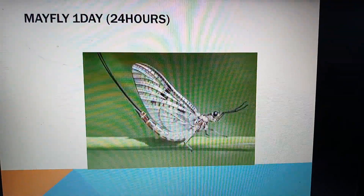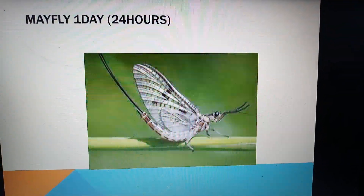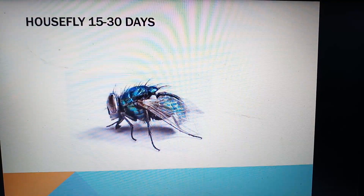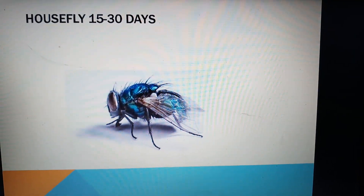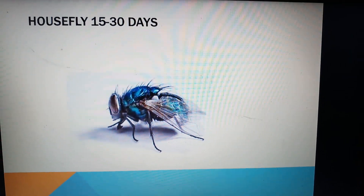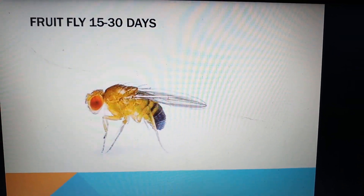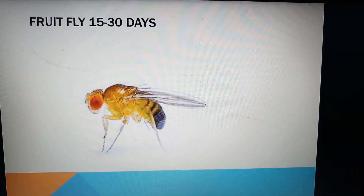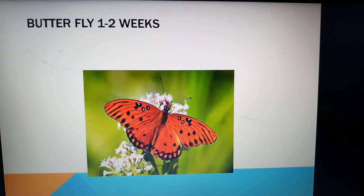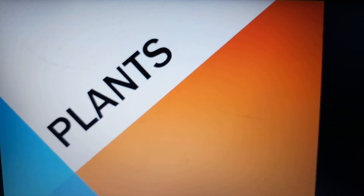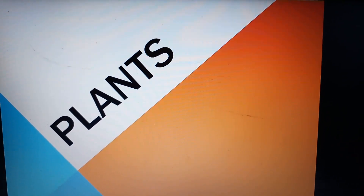For insects: mayfly has a lifespan of around 1 day (24 hours), which is the shortest lifespan of an insect. House fly is 15 to 30 days, fruit fly is also similarly 15 to 30 days, and butterfly is 1 to 2 weeks.